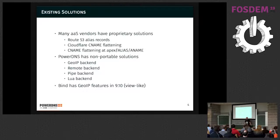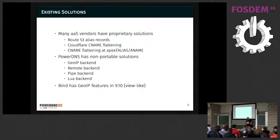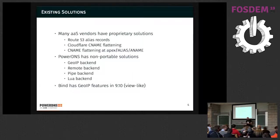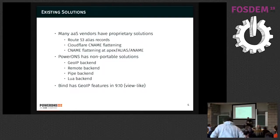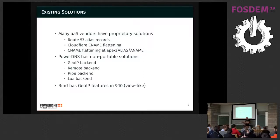There are many solutions to these issues: alias records, CNAME flattening, flattening at the apex. We have a bunch of non-portable solutions — a GOIP backend configured in YAML, a remote backend that calls a script to return records in any shape or form, a PI backend that does the same as a sub-process, and a LUA backend. BIND has GOIP features in 9.10 and on. But all these features are not compatible, and there is no way to use in-band AXFR to push this information to slaves.